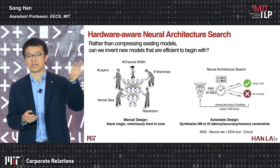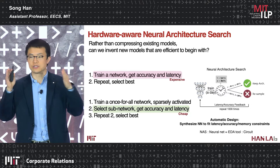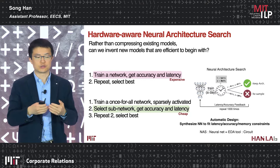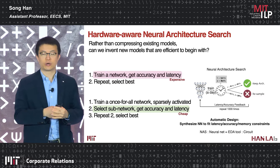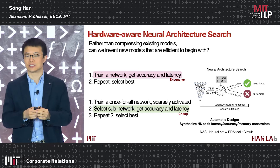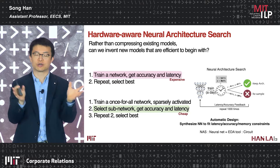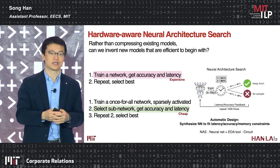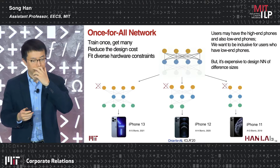Previously, we had to train the model to evaluate its accuracy and latency, repeating this time-consuming process to select the best one. We propose a much more efficient technique: train a once-for-all network that is sparsely activated, then select a subnetwork without any retraining to get the accuracy and latency. This greatly reduces design cost, similar to training a neural network only once, by sampling from the once-for-all network and selecting the best fit.